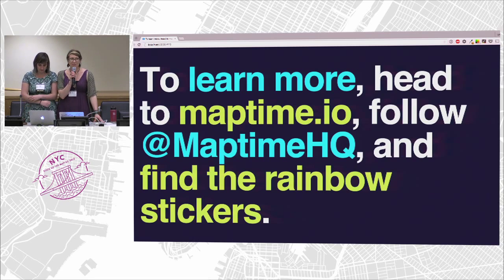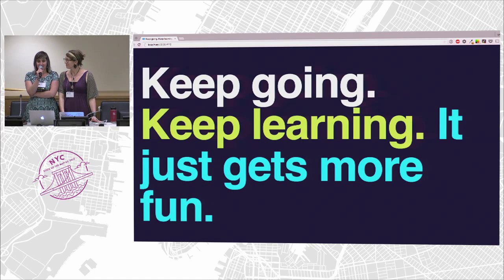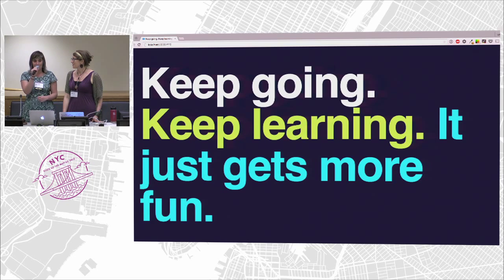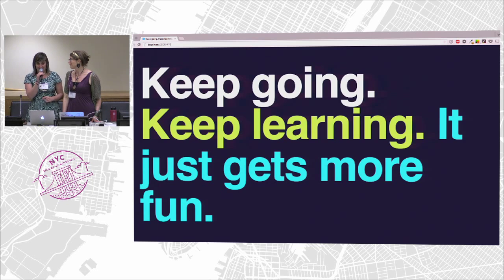So if you want to learn more, head to maptime.io. Follow us at maptimeHQ on Twitter and find all the rainbow stickers. Keep going, keep learning — it just gets more fun all the time. All of a sudden you have a MapTime Corvallis where every single person who shows up is a Java developer — not JavaScript, Java — doing crazy hardcore analysis, putting their materials online for you to try. You end up with 25 different versions of introduction to Leaflet or introduction to web mapping. Almost every chapter has had a meeting where they've edited OpenStreetMap. We have MapTime for kids. MapTime shows up at conferences. People are meeting up regionally. Everyone is really excited about this idea, because it's actually an idea we've all had before: 'I don't know how to do this — I'm going to ask someone.' That's all we're doing.